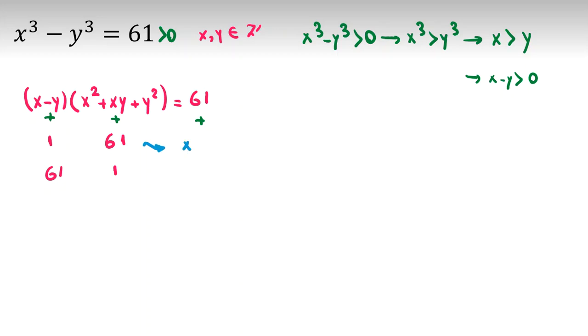In the first case, x minus y is 1, and x squared plus xy plus y squared equals 61. From here, you conclude x equals y plus 1. And if we replace it here, y plus 1 squared plus y plus 1 times y plus y squared equals 61.